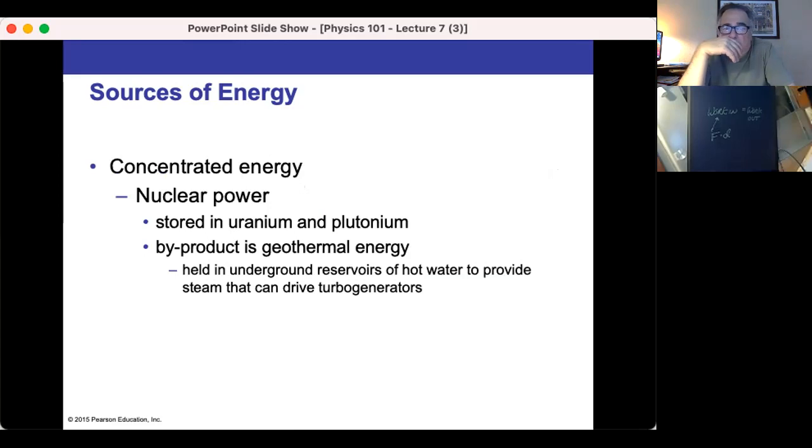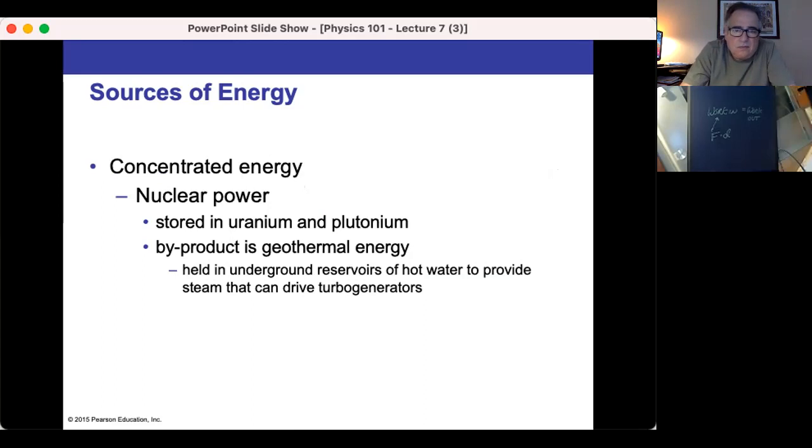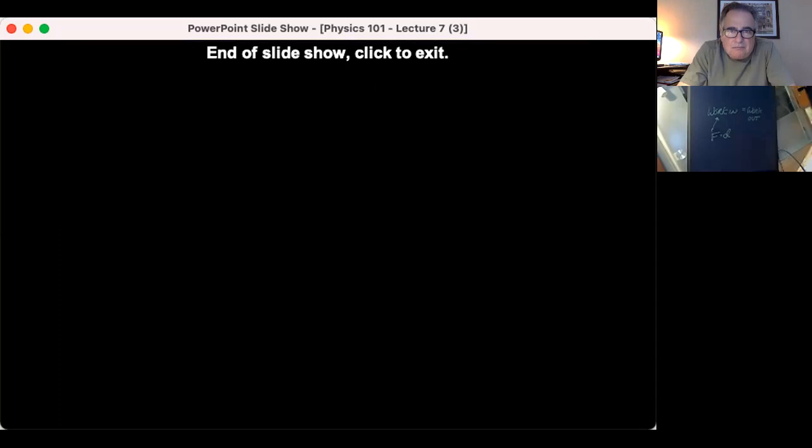Another type of energy is nuclear power, because there's a tremendous energy stored in uranium and plutonium, and we can convert that. We can also use geothermal energy. You see this whole idea of fracking. We have a hole. We do hydraulic fracturing. We have a second hole in the water circulation, and that circulation, because of the heat, the power is a power plant. This is a geothermal power plant, using hydraulic fracturing.